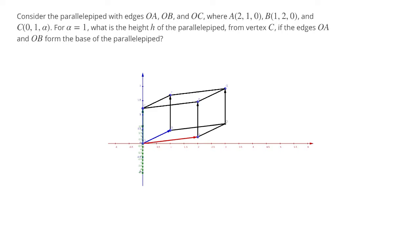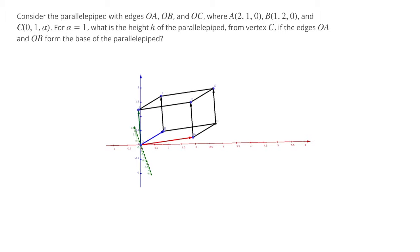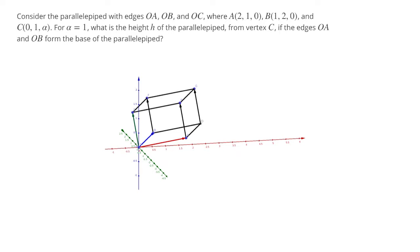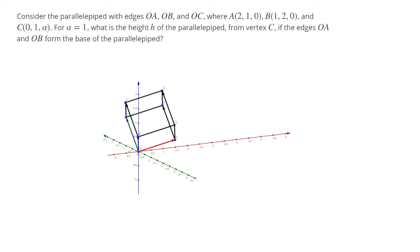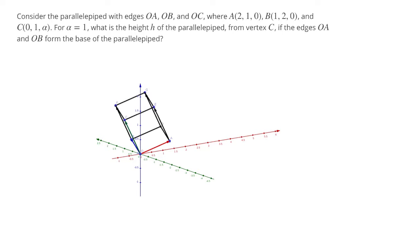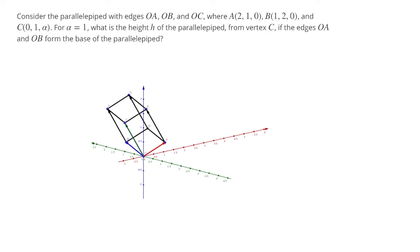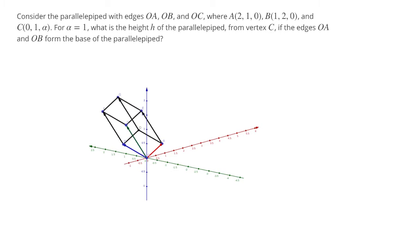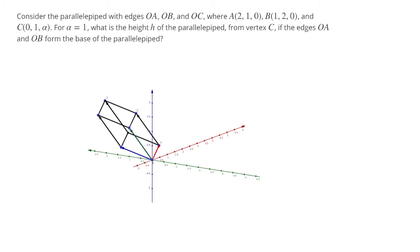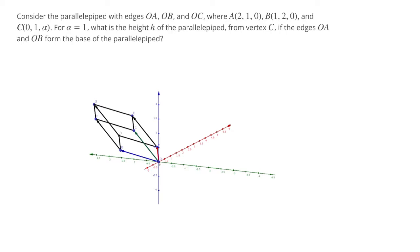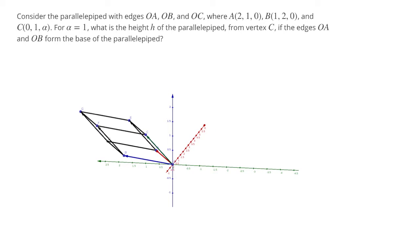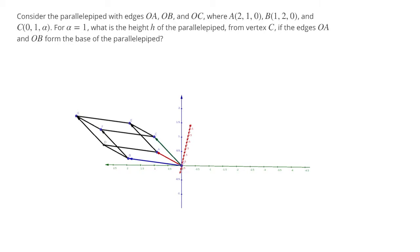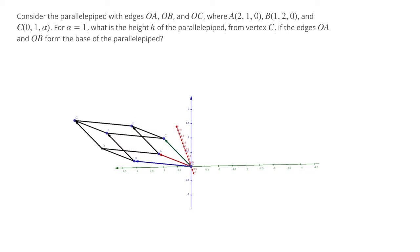Greetings everybody, and welcome to our next example of cross products. We're given a parallelepiped with edges OA, OB, and OC. In the diagram rotating around, we have OA as the red vector, OB as the blue vector, and OC as the green vector. We are asked: what is the height of the parallelepiped from the vertex C if the edges OA and OB form the base? We'll find the volume and use the fact that volume equals area of the base times the height.